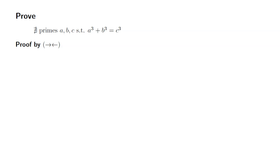I'm going to prove this by contradiction. As usual, I'll assume the opposite of what we want to say. So we assume that there are prime numbers a, b, and c such that a³ + b³ = c³.